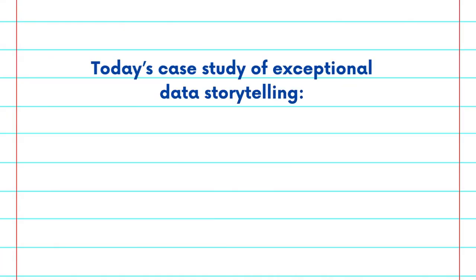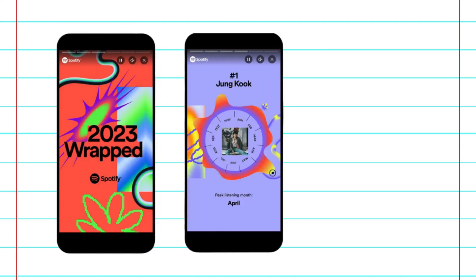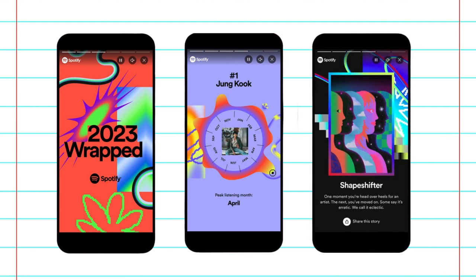Today we are exploring an exciting and relatable example of data storytelling done exceptionally well: Spotify's Wrapped campaign. Spotify, a leading music streaming service, has been engaging its users with an annual feature called Wrapped. This campaign provides a personalized summary of each user's listening habits over the year — their most played songs, favorite artists, and even genres.